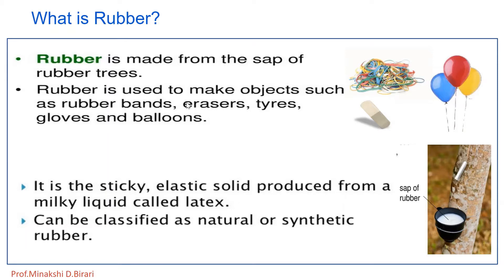Rubber is a material which can be stretched and shrink. It is a polymer that can be produced from natural sources — for example, natural rubber — or can be synthesized on an industrial scale. Many things are made from rubber, like gloves, tires, plugs, and masks.